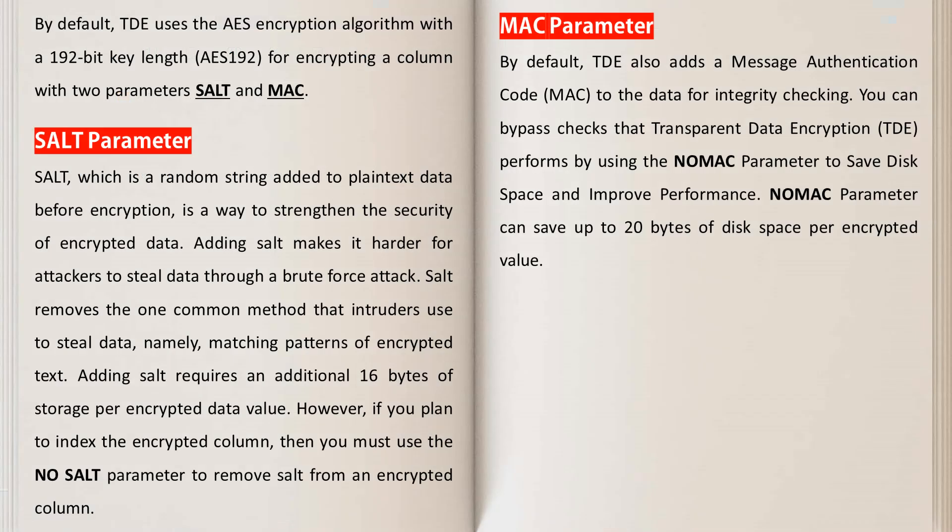Salt is a random string added to the plain text data before encryption — it is a way to strengthen the security of the encrypted data. Adding salt makes it harder for attackers to steal data through a brute force attack. Salt removes a common method that intruders use to steal data, namely matching patterns of encrypted data. Adding salt requires an additional 16 bytes of storage per encrypted data value. However, if you plan to index the encrypted column, then you must use the NO SALT parameter to remove salt from an encrypted column.